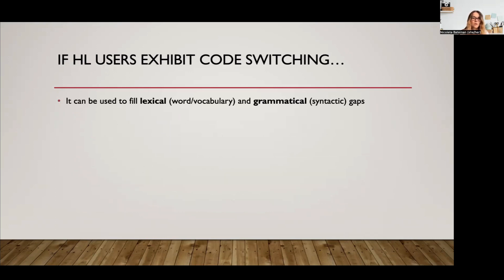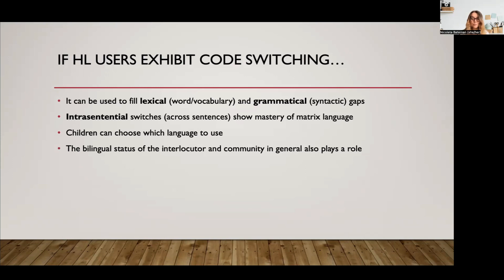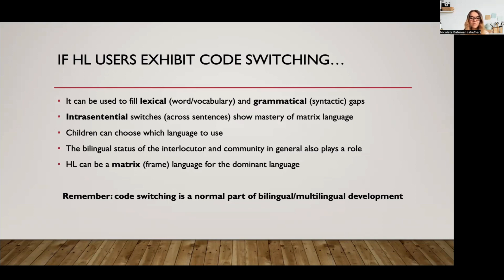Some takeaways for heritage language speakers: if they show code switching, they can use it to fill lexical or grammatical gaps. Intrasentential switches across sentences show mastery of the matrix language. They can make choices in which language to use for the same kinds of purposes that adult speakers use, or based on context. The bilingual status of the interlocutor and the community in general also plays a role in their code switching. The important thing to remember is that code switching is a normal part of bilingual or multilingual development, and it is also a very exciting area to study.